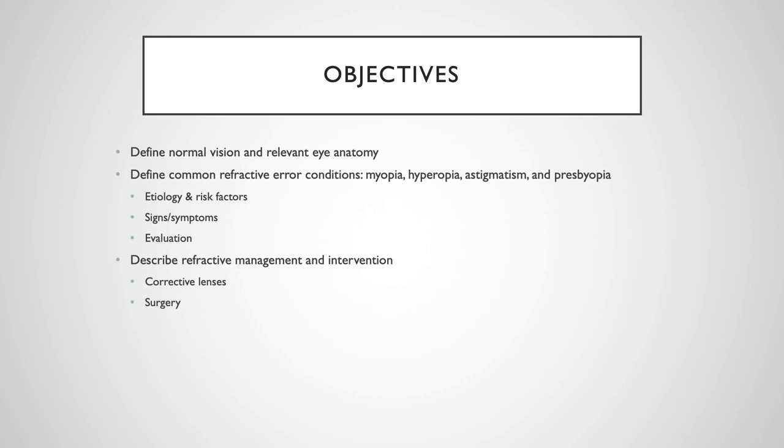In this slideshow, we'll be discussing normal vision, types of refractive error, specifically myopia, hyperopia, astigmatism, and presbyopia, how they relate to chronic vision loss, and how they can be treated through corrective lenses and or surgery.